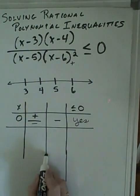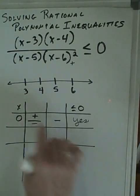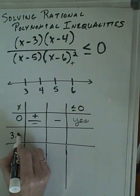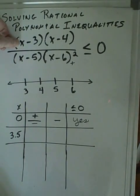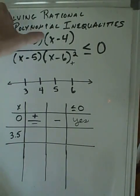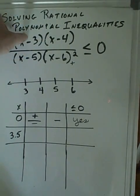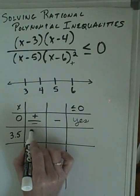So then we're going to pick another value. Now our next value we have to pick has to be between three and four. So an easy one to test would be 3.5. If we put 3.5 here would be positive. Put 3.5 here, this value would be negative. A positive times a negative is a negative.